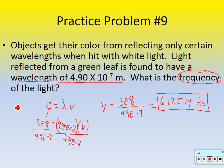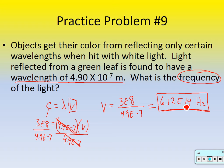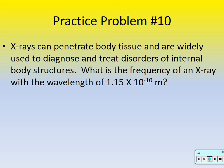We're solving for frequency, so we rearrange — divide both sides by the wavelength. It cancels out on the right side. So put in your calculator: 3 times 10 to the 8th divided by 4.9 times 10 to the minus 7. You get a huge number — times 10 to the 14th — that's a lot of waves per second. This represents green light; that's what's coming off the leaf.